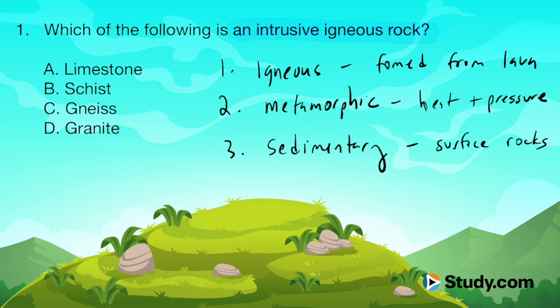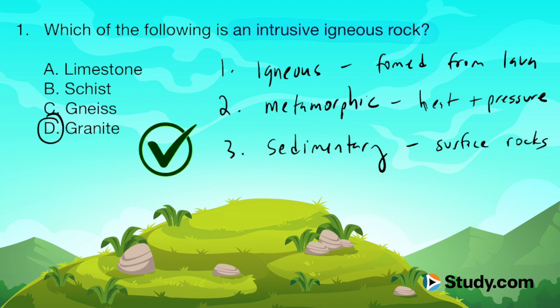That requires us to know our rocks. It turns out that for A, limestone — that's a sedimentary rock. B and C, schist and gneiss, are both metamorphic. And so D, granite, is the only igneous rock from this list. So D, granite, is the correct answer.